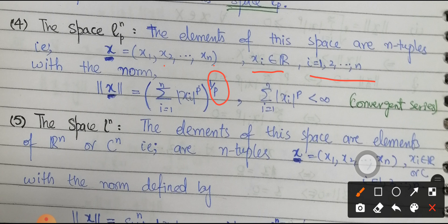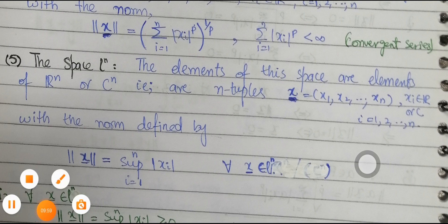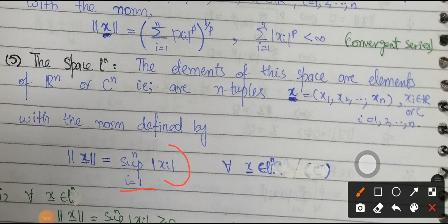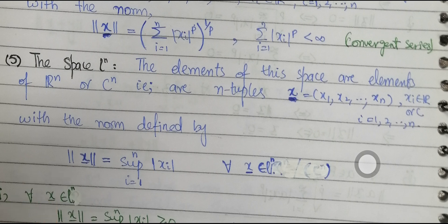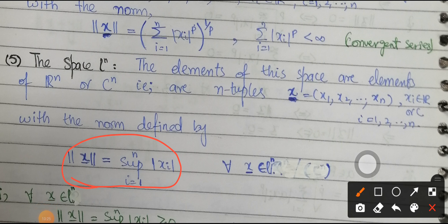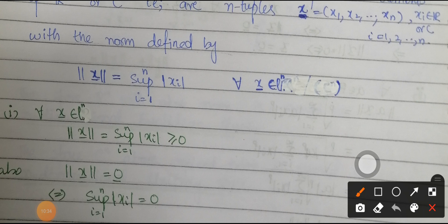Example 5: The space lⁿ∞ consists of elements of ℝⁿ or ℂⁿ — that is, n-tuples x = (x₁, x₂, …, xₙ) with xᵢ ∈ ℝ or ℂ — with the norm ‖x‖ = sup_{i=1}^{n} |xᵢ| for all x ∈ lⁿ∞. The space lⁿ∞ is the collection of n-tuples from ℝ or ℂ. We now verify that this function defines a norm satisfying the three conditions.